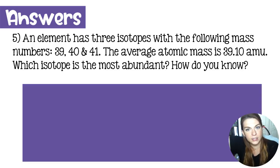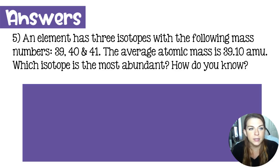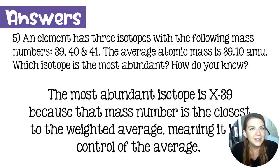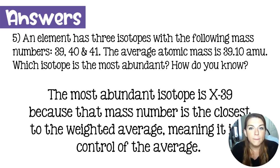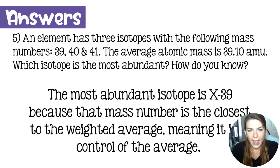Last up: an element has three isotopes with mass numbers 39, 40, and 41. The average atomic mass is 39.10 atomic mass units. Which isotope is most abundant? The most abundant isotope is 39, because the average atomic mass is super close to 39. A lot of elements have more than three isotopes — especially larger elements — but on the whole, when you do these calculations your teacher will mostly ask about smaller elements, and a little math knowledge will let you answer all the questions.